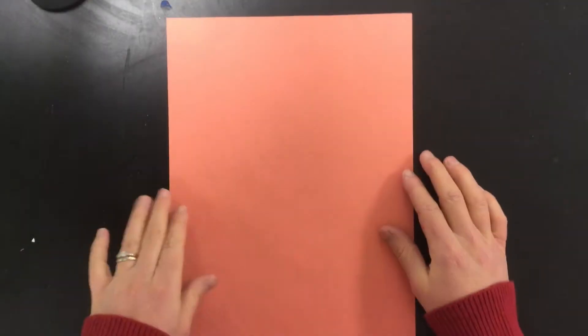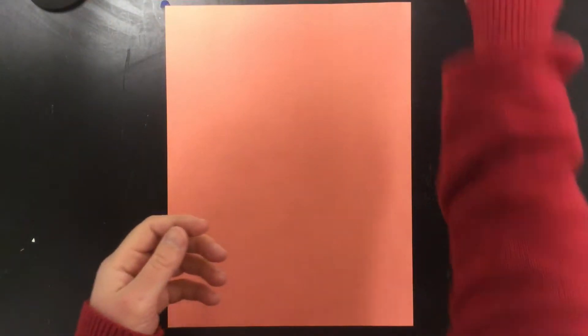This is part one of our tree relief collage. You're going to need a piece of paper, you can pick any color, some scissors, and some oil pastels.